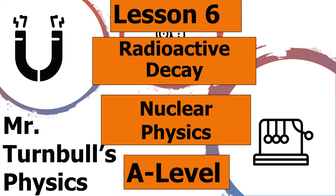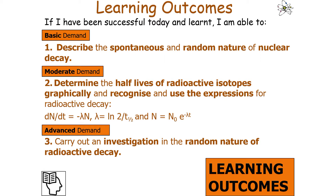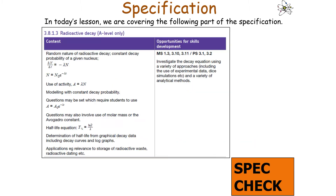Hello, and welcome to this lesson on radioactive decay, which is part of the nuclear physics topic in AQA A-level physics. In today's lesson, we're going to mathematically calculate values of radioactive decay. By the end, we should be able to describe the spontaneous and random nature of nuclear decay, determine half-lives graphically, recognise and use expressions for radioactive decay, and carry out investigations into its random nature. This covers AQA specification 3.8.1.3: radioactive decay.